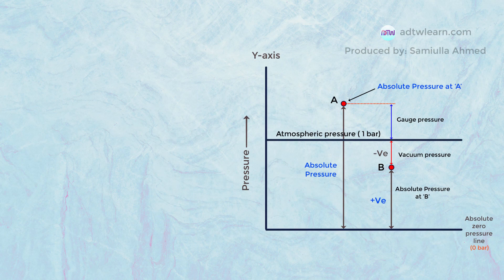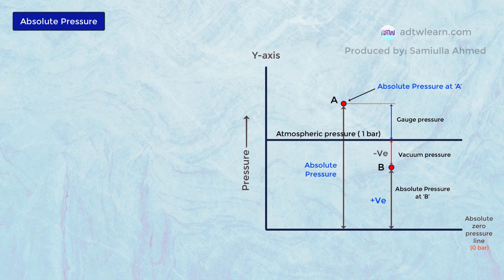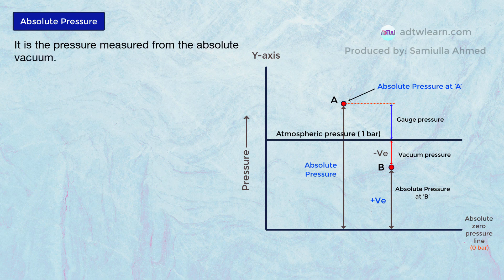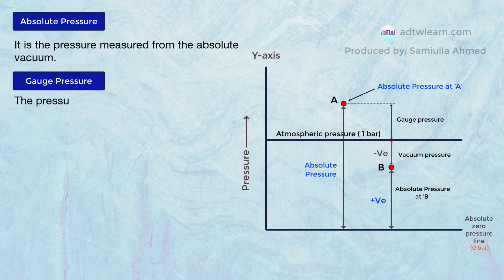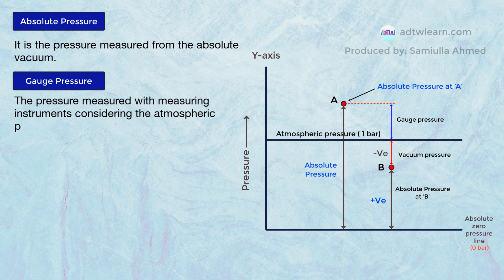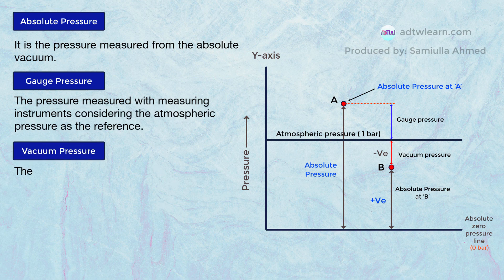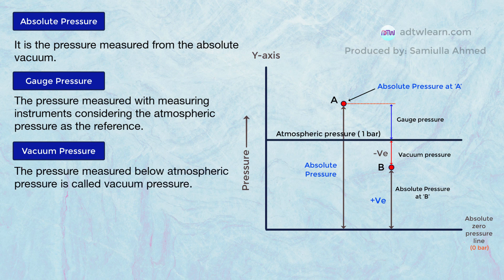Let us summarize. Absolute pressure: it is the pressure measured from the absolute vacuum. Gauge pressure: the pressure measured with measuring instruments, considering the atmospheric pressure as the reference. Vacuum pressure: the pressure measured below atmospheric pressure is called vacuum pressure.